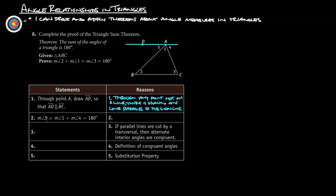Now we can say measure of angle 5 plus measure of angle 1 plus measure of angle 4 has to equal 180 — that's the angle addition postulate. Since parallel lines are cut by a transversal, alternate interior angles are congruent. So angle 5 is congruent to angle 2, and angle 4 is congruent to angle 3. By definition of congruent angles, measure of angle 5 equals measure of angle 2, and measure of angle 4 equals measure of angle 3.